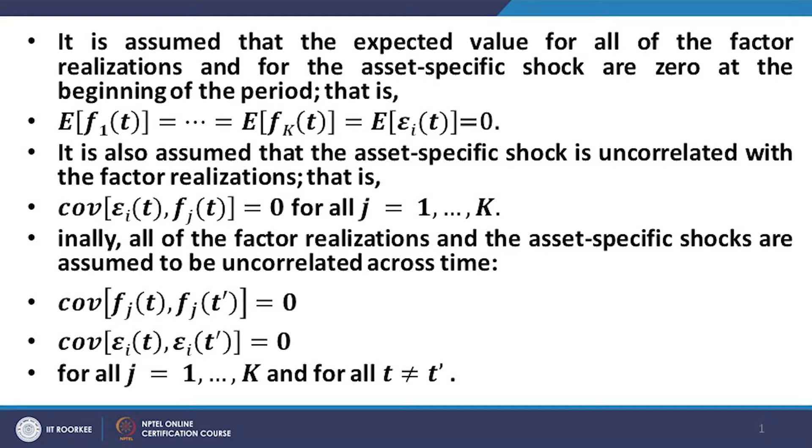It is also assumed that the asset-specific shock is uncorrelated with the factor realizations. Just as in the CAPM model where R_m and epsilon_i are independent of each other, the APT model also assumes that the idiosyncratic shock is not correlated with any of the systematic risk factors.